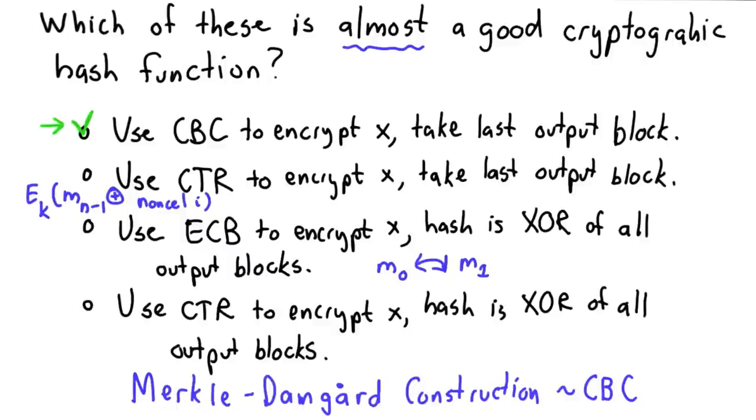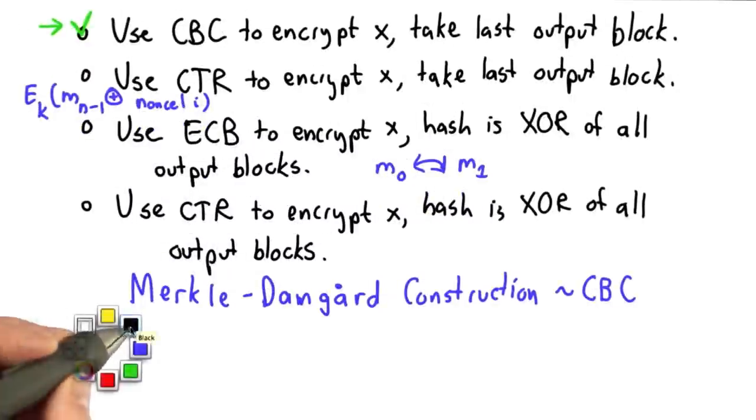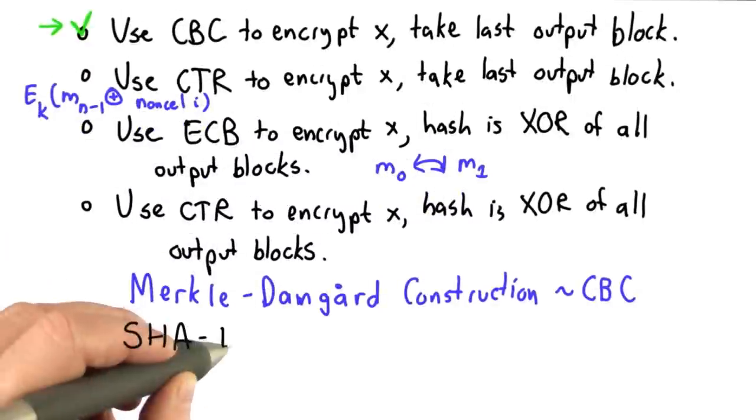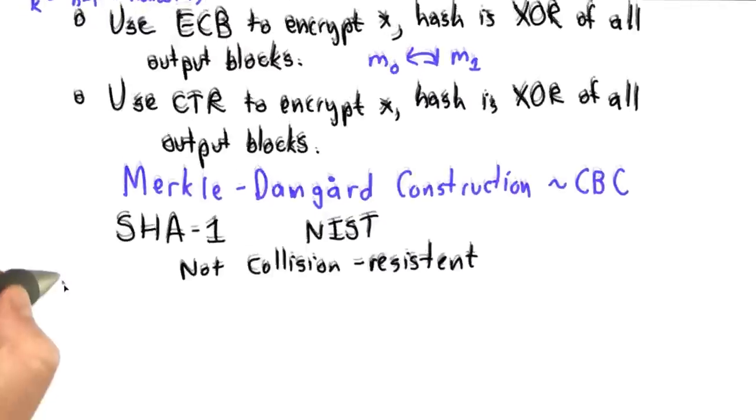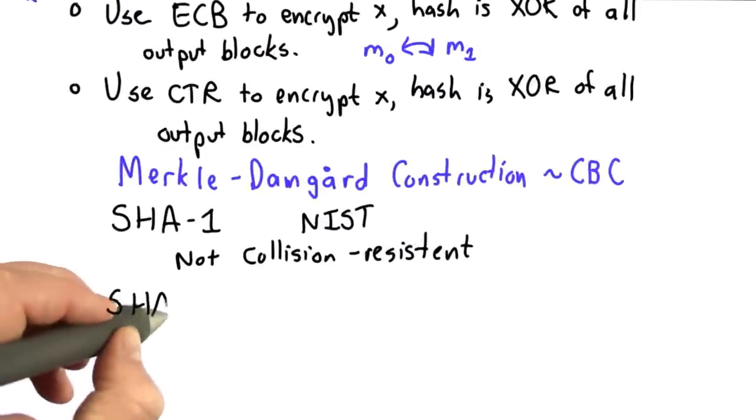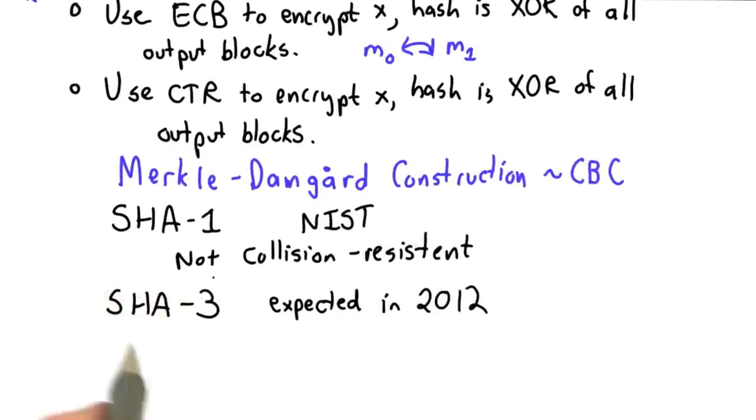There's some subtleties to make this work as a hash function, and in fact there's a lot of controversy today about how well hash functions work. The ones that were considered the standard until recently was a hash function known as SHA-1. This was a standard accepted by NIST, and people have found ways to find collisions in SHA-1. There is an ongoing competition to select a new standard hash to find a replacement, to find a hash function that is closer to achieving these properties, and it's expected that the winner will be announced in 2012. There are five finalists currently under consideration.